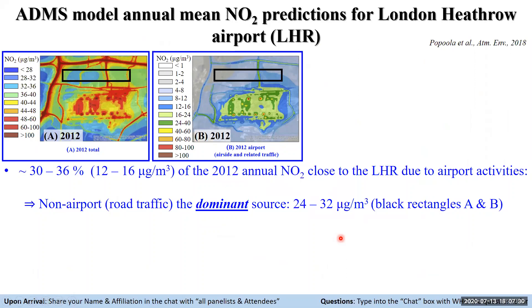Having validated the ADMS airport model, we're now exploring how to exploit it to look at air quality impacts within the airport and future changes. The annual mean contour map for NO2 concentration is shown in the left-hand panel, and the right-hand panel shows the same annual mean concentration but only for the contribution due to airport-related activities including airport traffic. Within the vicinity of the airport, about 30 to 36% of the annual mean NO2 concentration is coming from airport-related activities, showing that the most dominant contribution is still from road traffic.